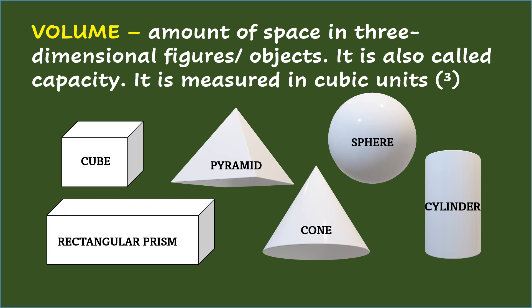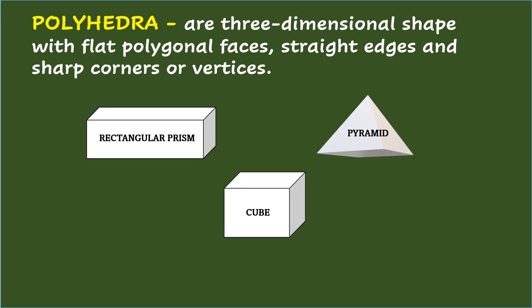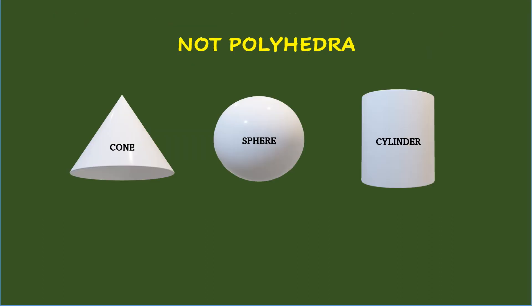Volume is also called capacity, which is the amount of liquid a container can hold, and it is measured in terms of cubic units represented by a number 3. Three-dimensional figures or objects with flat polygonal faces, straight edges, and sharp corners or vertices like the rectangular prism, cube, and pyramid are known as polyhedra.